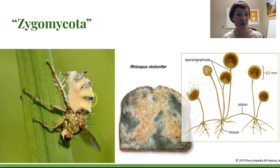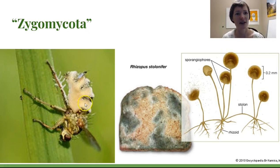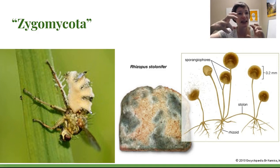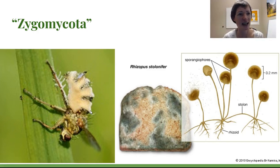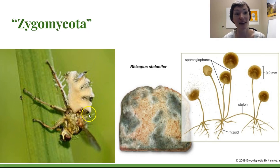One example I find all the time is Entomophthora, which means 'insect destroyer.' Flies get infected by this Zygomycete — it causes them to exhibit weird behavior where they latch onto a piece of grass or a leaf and just sit there. Then the fungus grows out of them in puffy white bands between the plates of their exoskeleton, and eventually it bursts open. You might see just the front half of a fly afterward, and sometimes a little halo of spores appears on a window nearby. They're more common than you think.